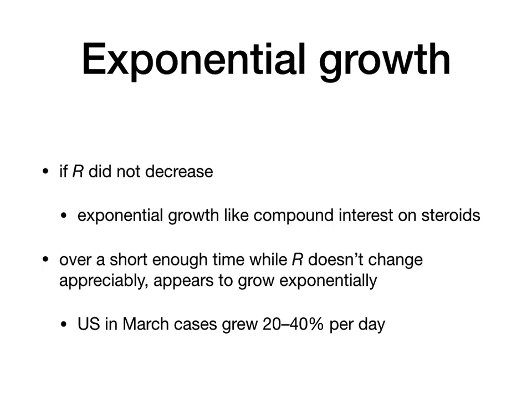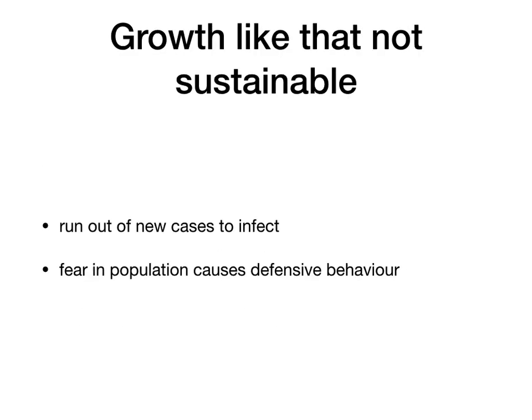If R did not decrease, you'd get exponential growth, which would be like compound interest on steroids. Over a time short enough where R does not change noticeably, it does appear to grow exponentially. The United States through March, for instance, had cases growing by 20 to 40% per day almost for the entire month. Now growth like that is not sustainable — first you run out of new cases to infect, so R starts to drop.